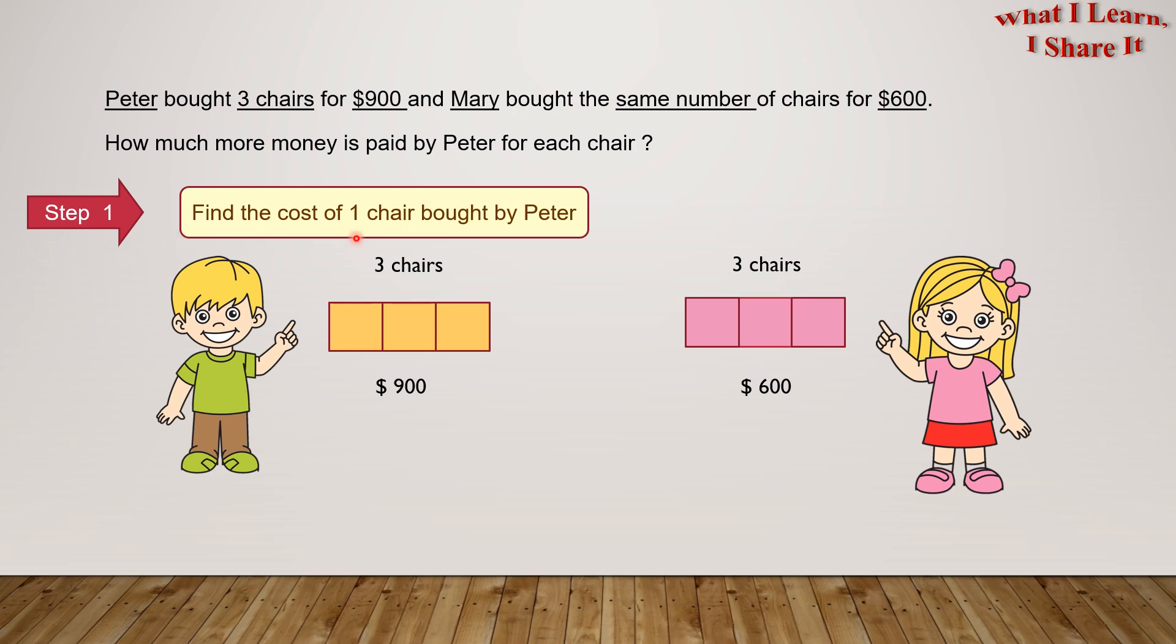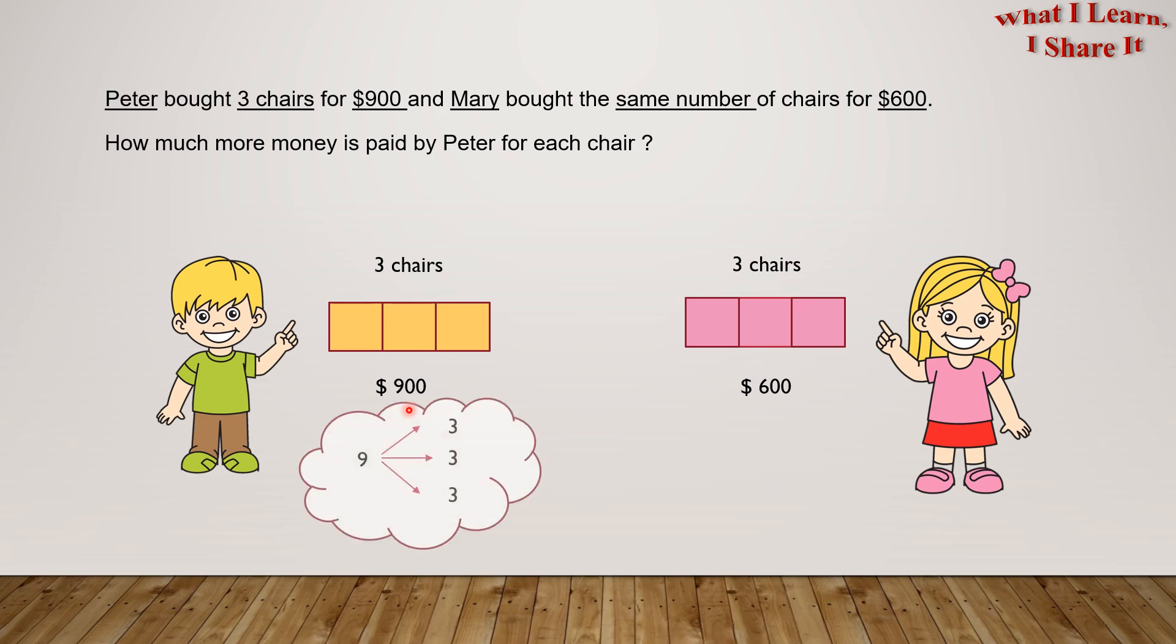So, step 1. Find the cost of one chair bought by Peter. We can all see here that for three chairs, Peter paid $900 in all. So now we have to divide $900 into three equal parts. We know that if we have to divide $900 into three equal parts, then each part will be equal to $300.